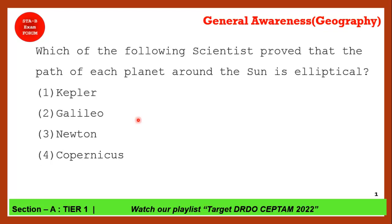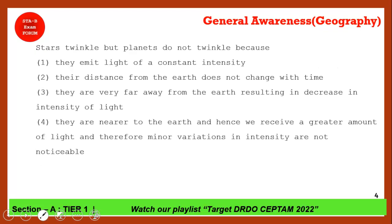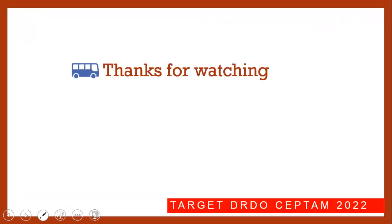Who proved that the path of each planet around the Sun is elliptical? The correct answer is Kepler. Kepler stated that planetary orbits are elliptical in shape. Copernicus established that all planets revolve around the Sun, debunking Ptolemy's geocentric theory. Finally, stars twinkle but planets do not — because planets are nearer to Earth and receive a greater amount of light with only minor variations in intensity.